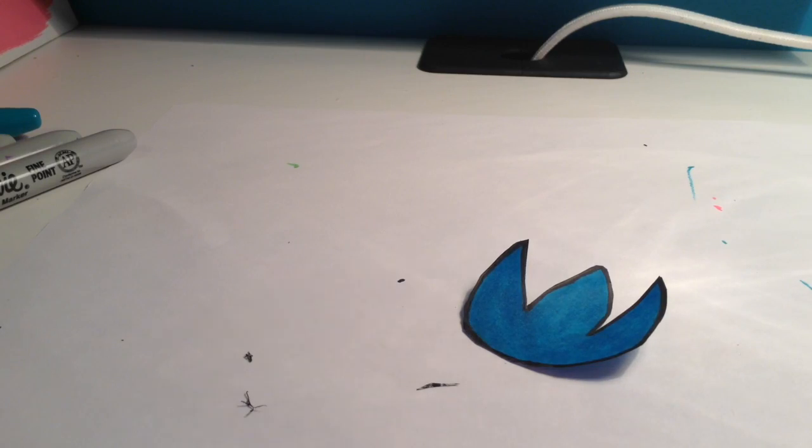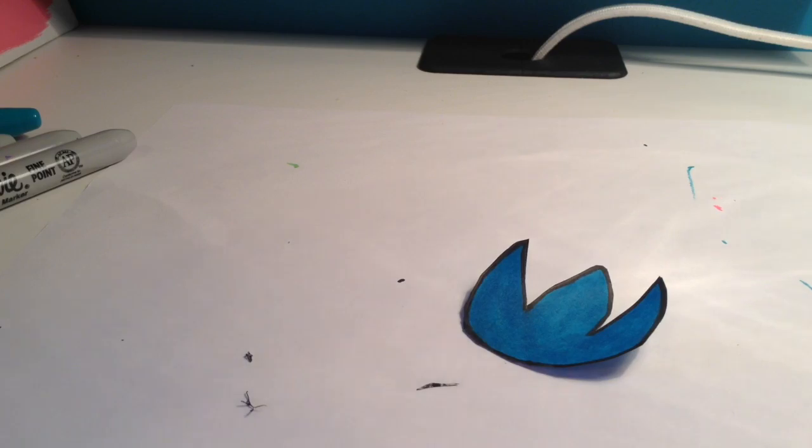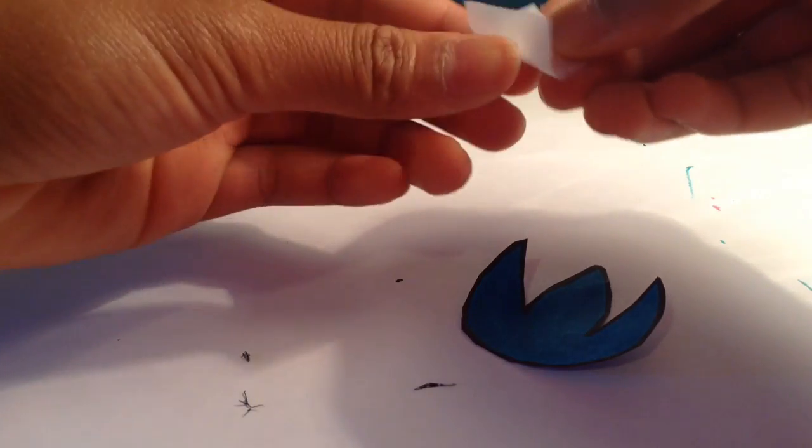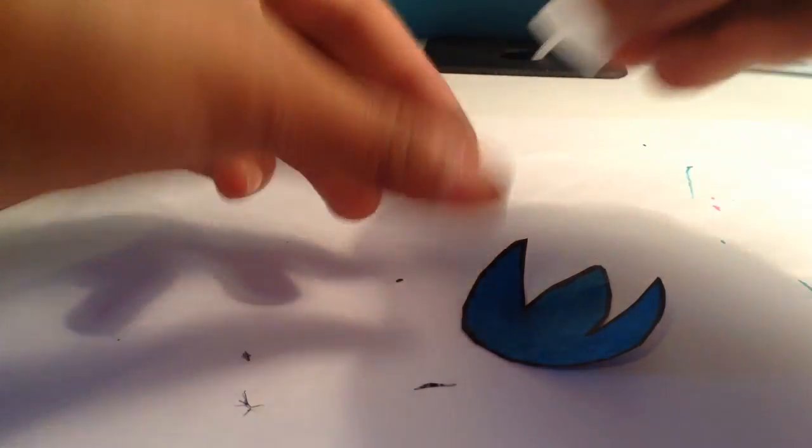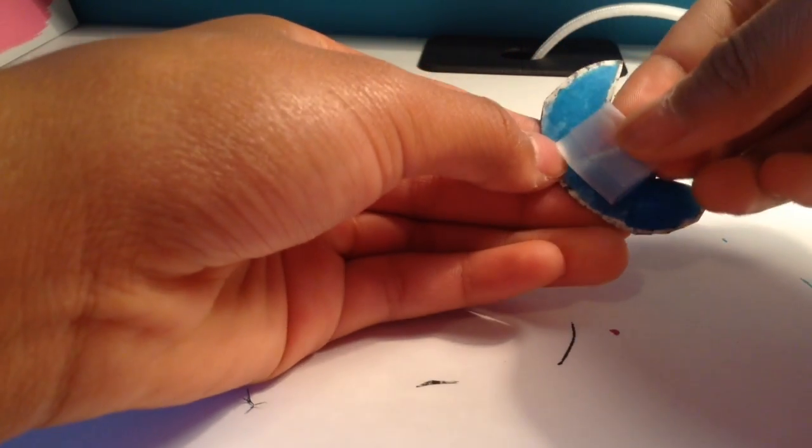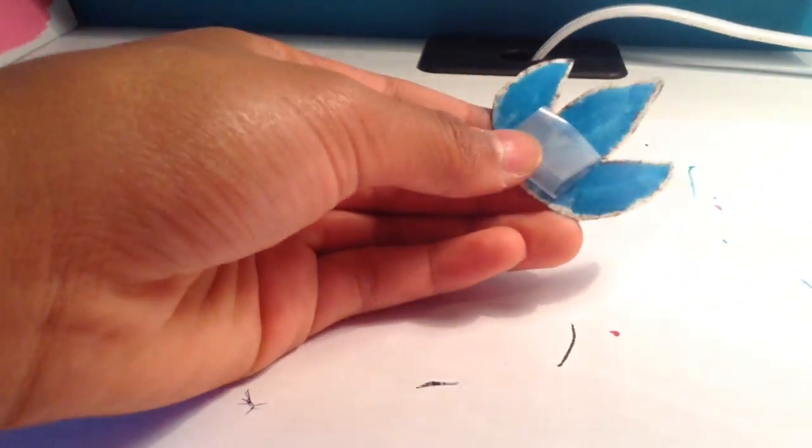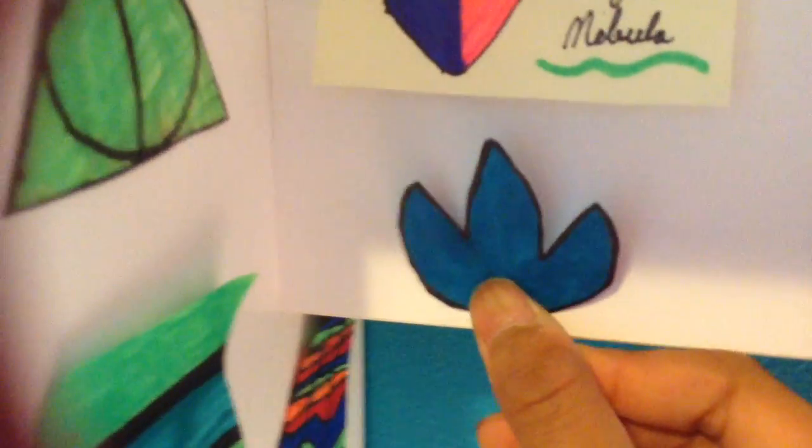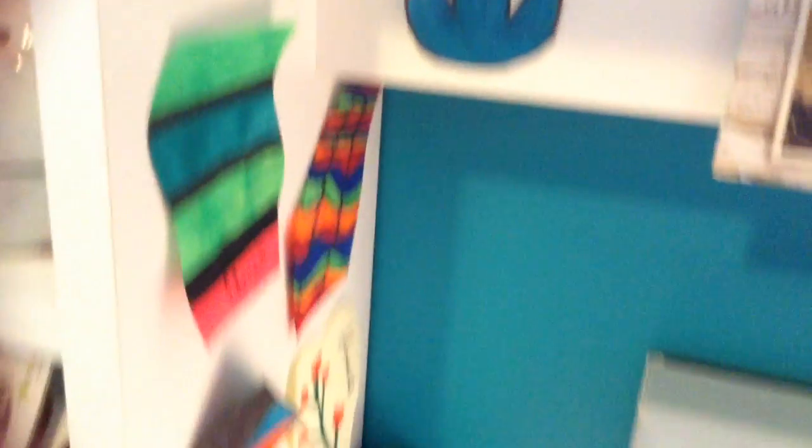Once you're done drawing, you're just going to cut it out with some scissors. Then you're going to take some tape and fold the tape together so they stick, and then you're going to put it on the back of your drawing and tape it to wherever you want. And as you can see, I already drew some and put some on.